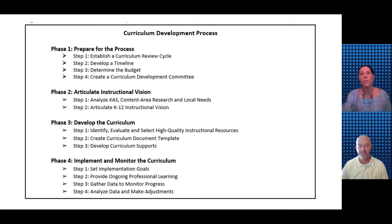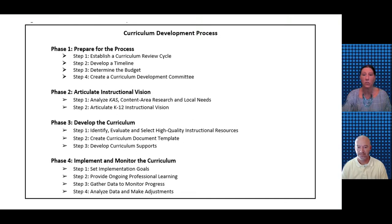This slide highlights the curriculum development process outlined in the model curriculum framework, which consists of four phases and includes preparing for the process, articulating an instructional vision, developing the curriculum, and then implementing and monitoring the curriculum. The first step in phase three is for the curriculum team to identify, evaluate, and select a primary high quality instructional resource and then use the HQ IR as they develop their curriculum.